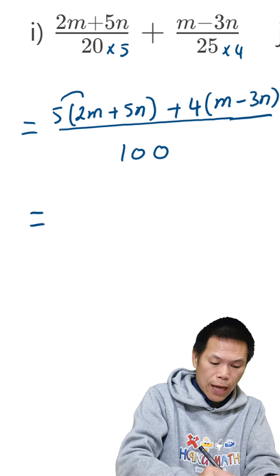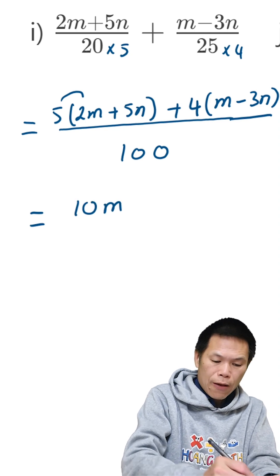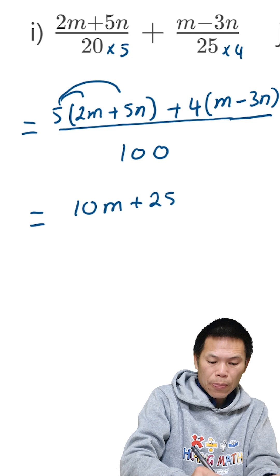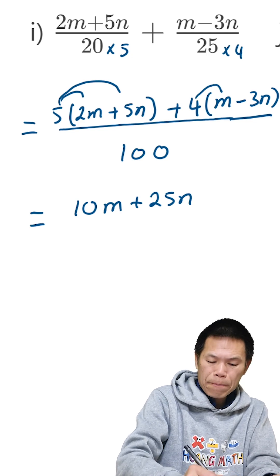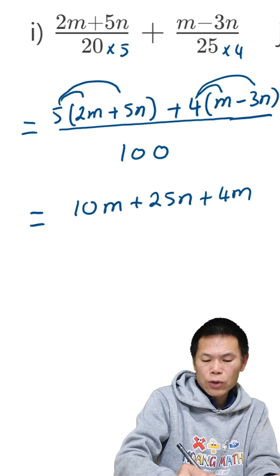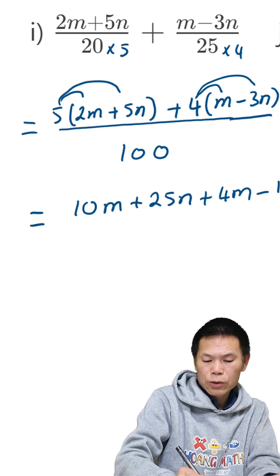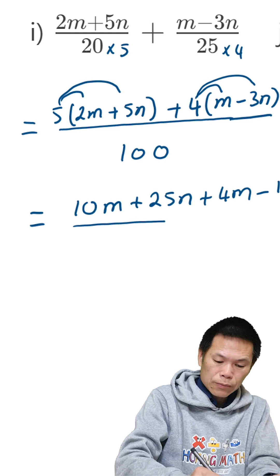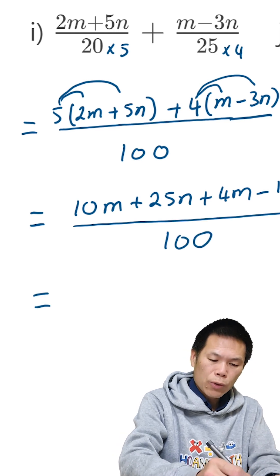...gives me 10, so 10m. 5 times 5 gives me 25, so 25n. Now 4 times m is 4m, and 4 times negative 3 is negative 12, so minus 12n over 100. That equals...